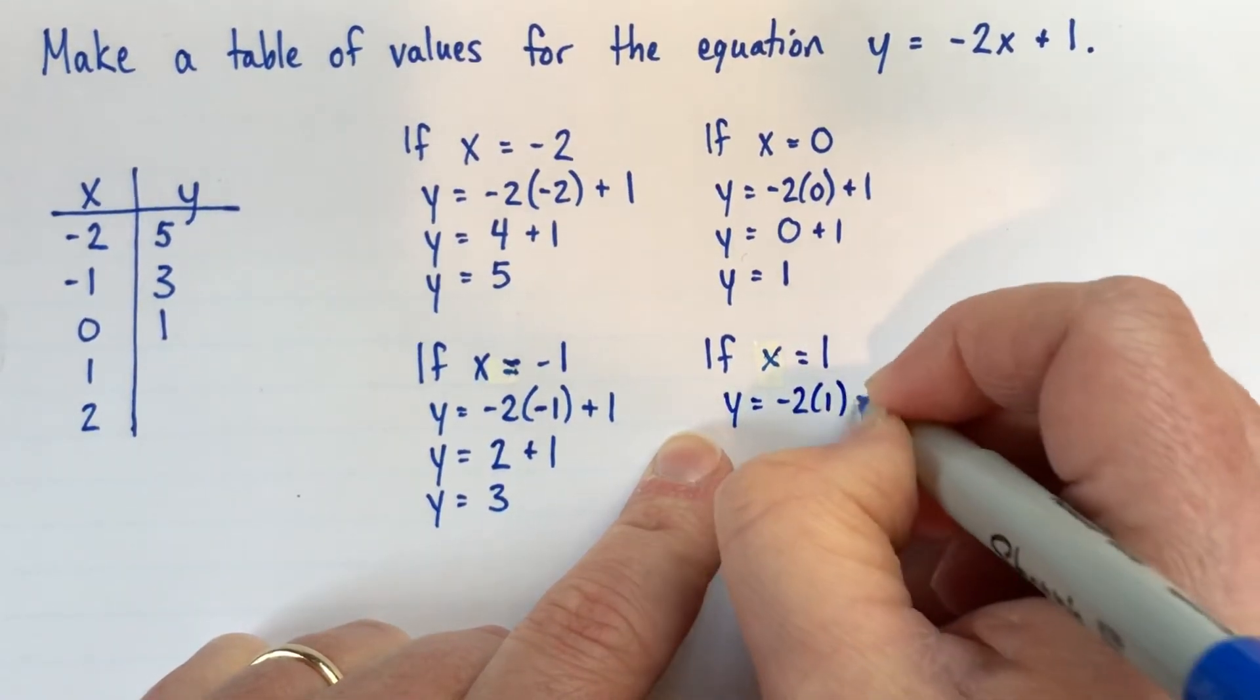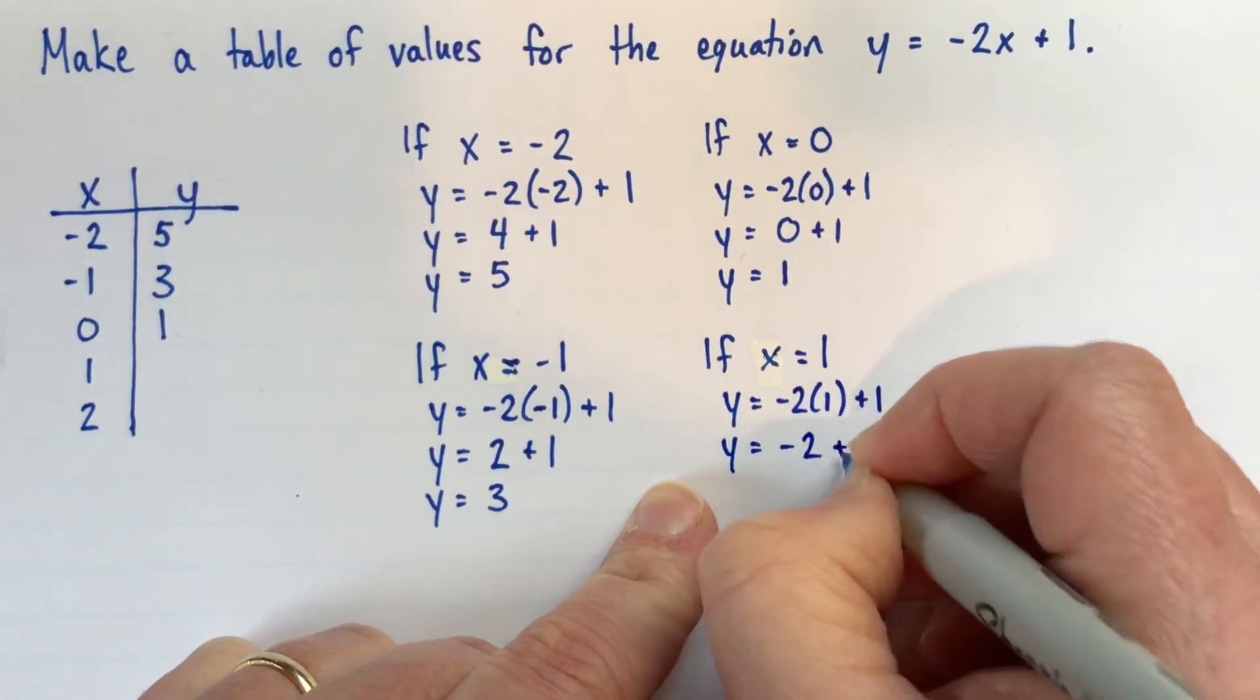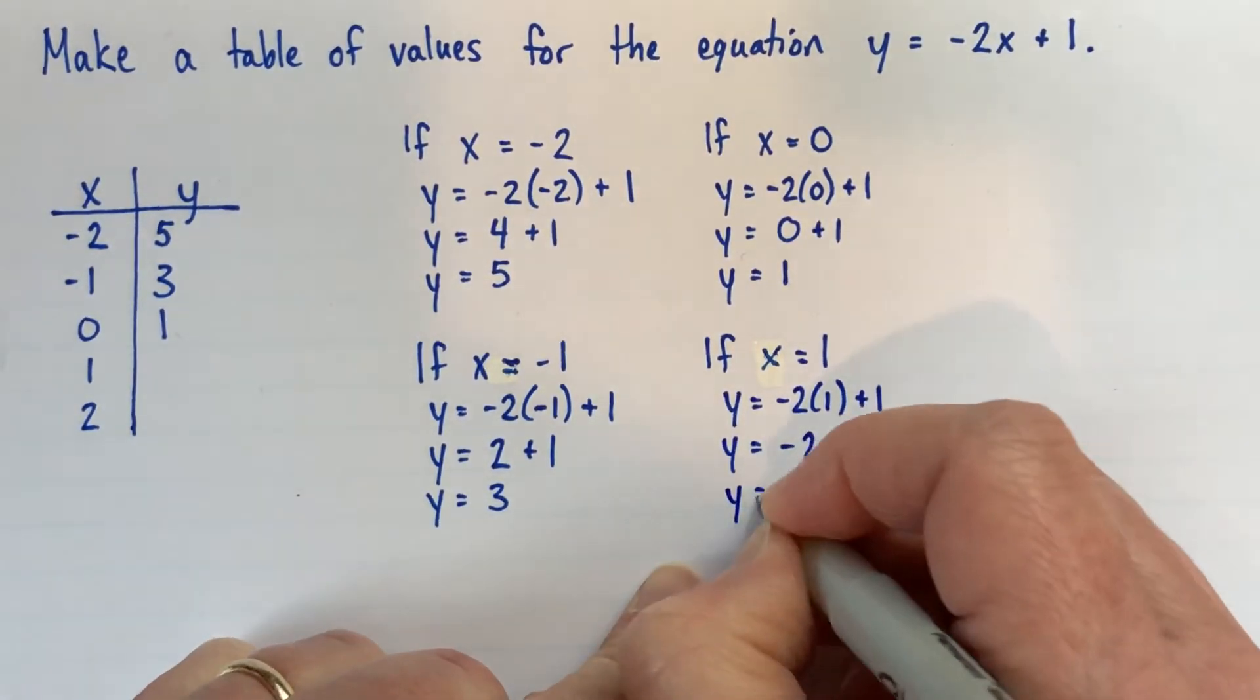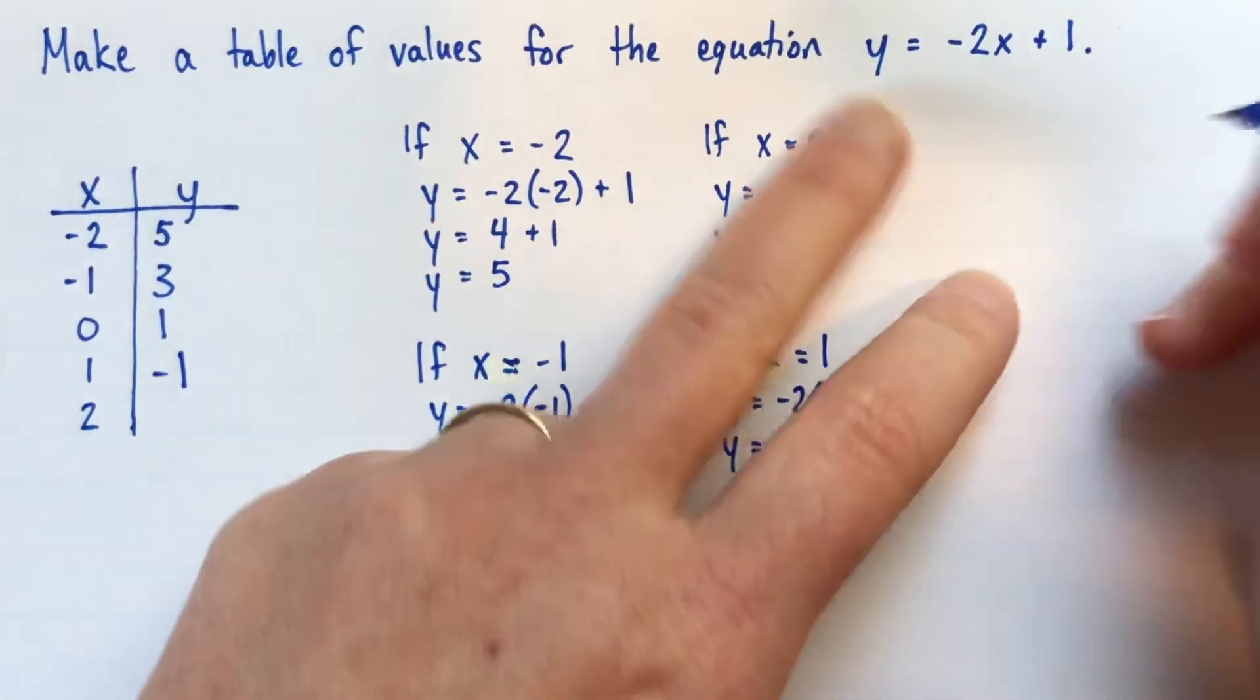negative 2 plus 1, which is negative 1. We'll do one more,